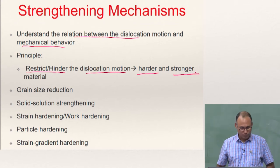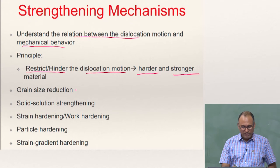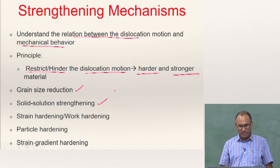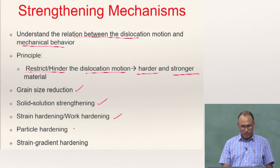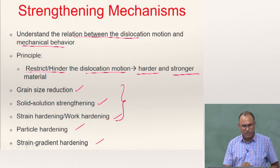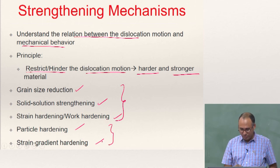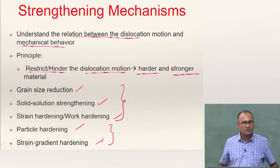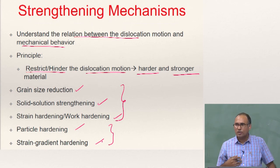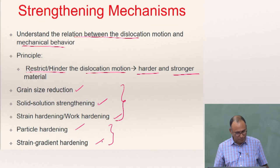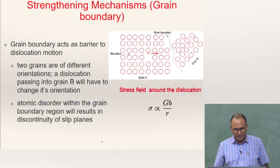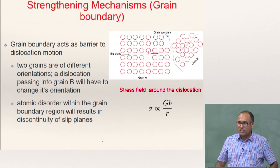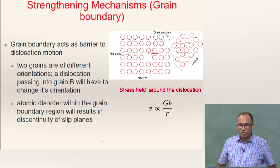What are the different ways you can do so? One way to increase the strength of a material is by grain size reduction, solid solution strengthening, strain hardening or work hardening, particle hardening, and strain gradient hardening. In this class, we will talk about only the first three mechanisms; for particle hardening and strain gradient hardening, I suggest you go back and read in textbooks on mechanical behavior of materials. First, we will talk about the strengthening mechanism due to grain boundaries.